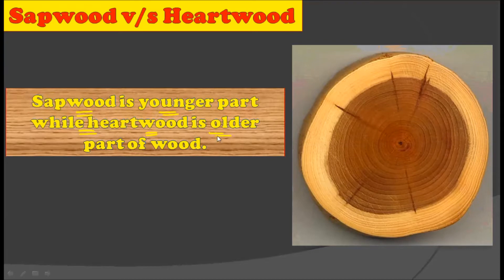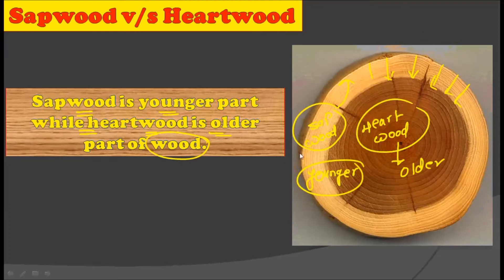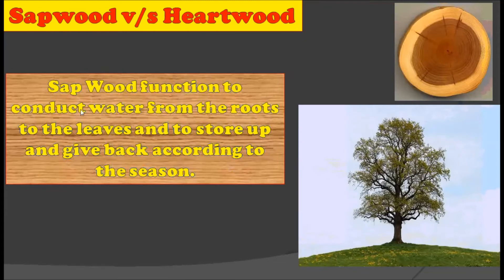Sapwood is the younger part while hardwood is the older part of the wood. Sapwood is always the newly formed part, while hardwood is always the older part — because hardwood formed first and then slowly got converted from sapwood over time. Hardwood always remains as the older part while sapwood is always created newly, making it the younger part.